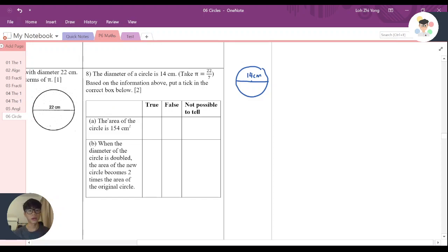And now, part A: the area of the circle is 154 cm squared. So let's try to figure it out. I know that the formula is πr², this is the area formula.